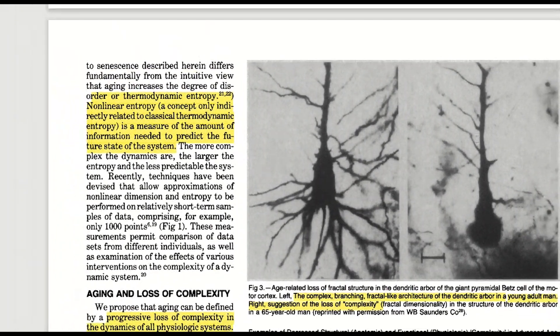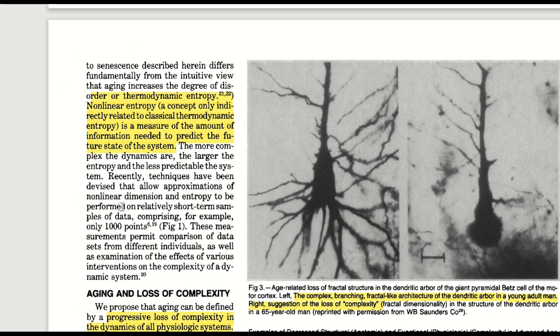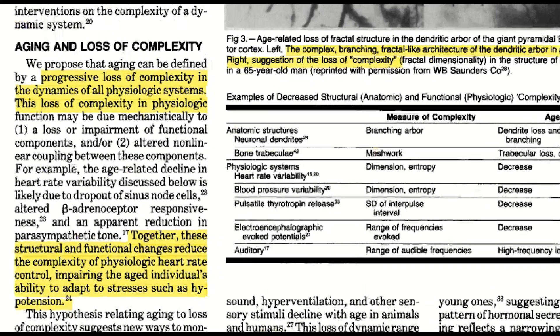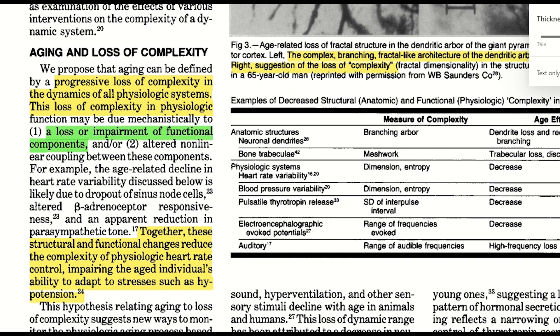Now, these anatomic and functional physiological descriptions are all good and well, but they don't really inform us much on what is causing these changes to occur. Two rationales are that complexity is lost due to a loss of functional components and or altered non-linear coupling between these components.